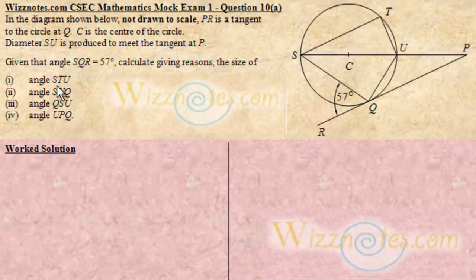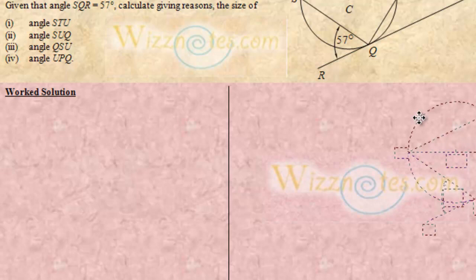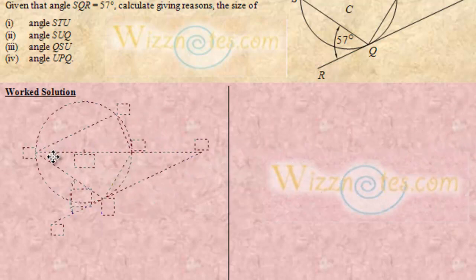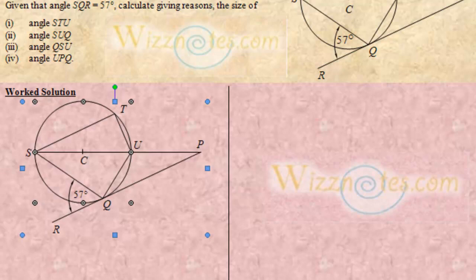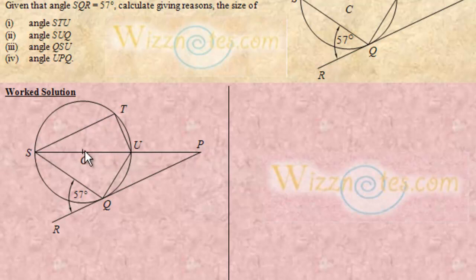First we're going to look at angle STU. Let's bring a copy of the diagram in. We want to find angle STU — that's the angle here. This angle is being subtended by the diameter. The angle at the circumference of a circle subtended by a diameter is a right angle.